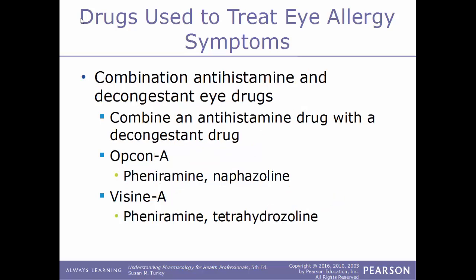It's common to have a combination drug that includes multiple aspects of treatment when it comes to eye allergies. A common combination is an antihistamine drug along with a decongestant drug. Examples include Opcon-A, a combination of pheniramine and naphazoline, and also the drug Visine-A, a combination of pheniramine and tetrahydrozoline.